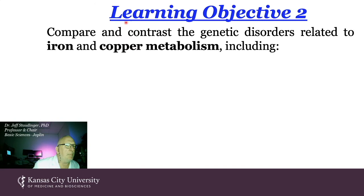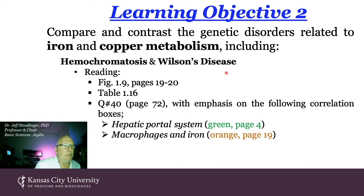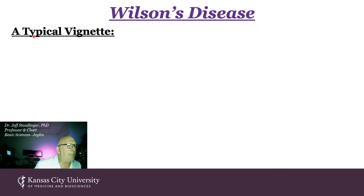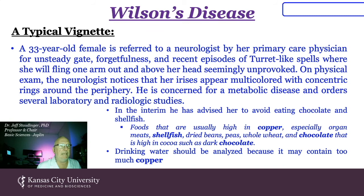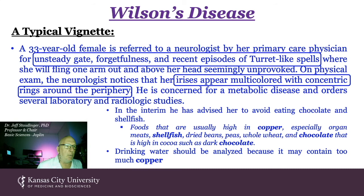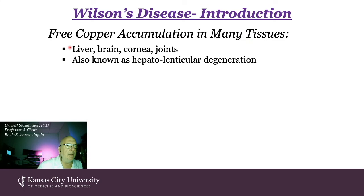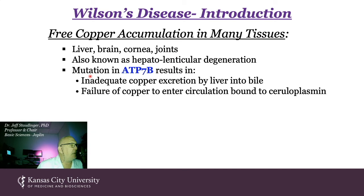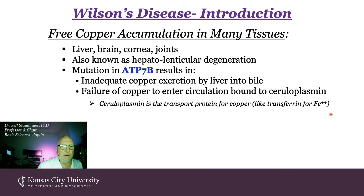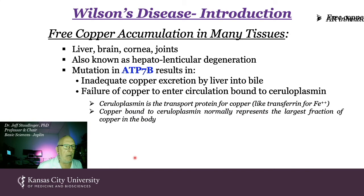Learning Objective 2: compare and contrast genetic disorders related to iron and copper metabolism — hemochromatosis and Wilson's disease, with main focus on Wilson's disease. Typical vignette: a 33-year-old female referred to a neurologist for unsteady gait, forgetfulness, and Tourette-like spells, with irises appearing multicolored with concentric rings. Wilson's disease involves free copper accumulation in liver, brain, cornea, and joints — also known as hepatolenticular degeneration, caused by mutation in ATP7B, with inadequate copper excretion into bile and failure of copper to enter circulation bound to ceruloplasmin.